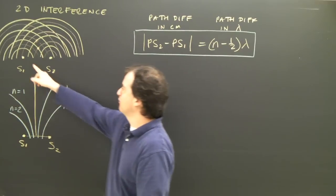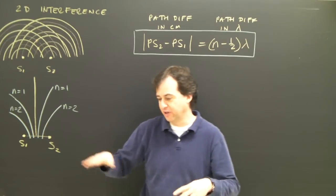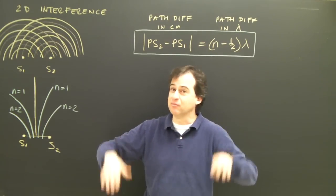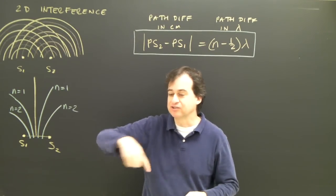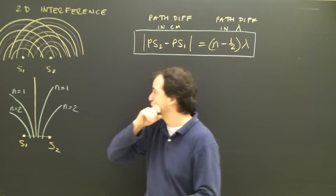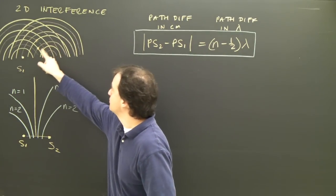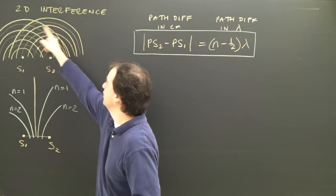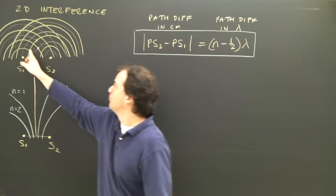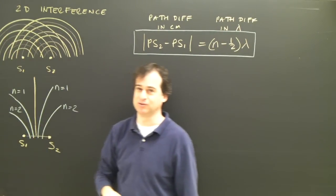If you have two point sources, imagine you're sitting on the edge of a swimming pool and you put your feet in and move them up and down. You create circular waves around your feet — those are called the two sources. You get a bunch of rings from one source and a bunch of rings from another source.